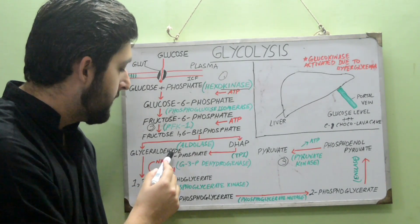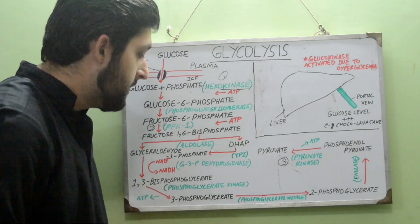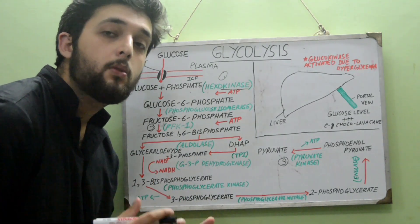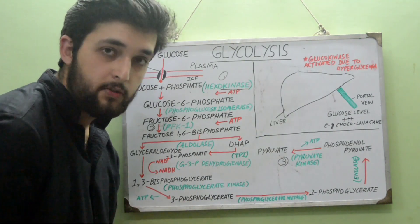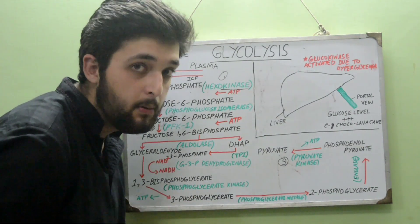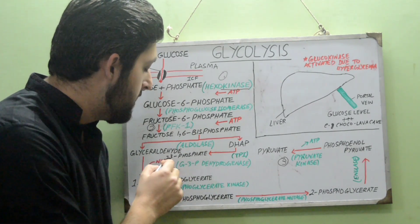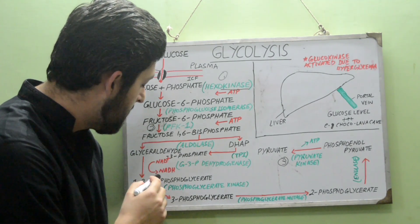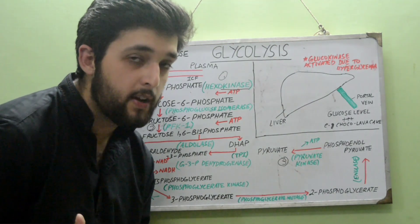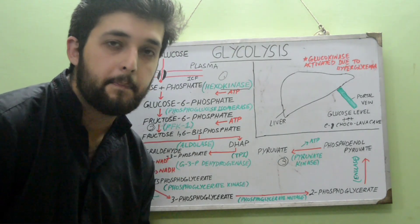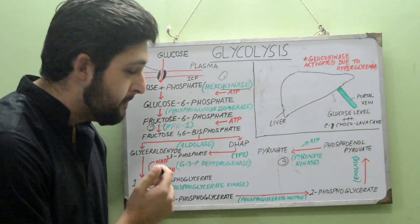Glyceraldehyde-3-phosphate is then converted to 1,3-bisphosphoglycerate (1,3-BPG) by glyceraldehyde-3-phosphate dehydrogenase. As a dehydrogenase, it removes hydrogen from the substrate and transfers it to NAD⁺, converting it to NADH. This NADH will later provide electrons for the electron transport chain in oxidative phosphorylation.